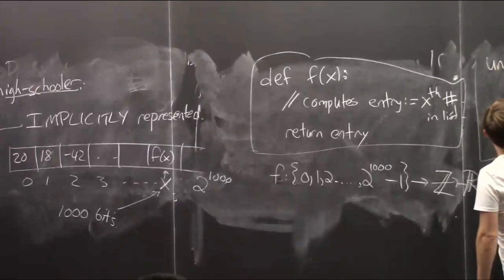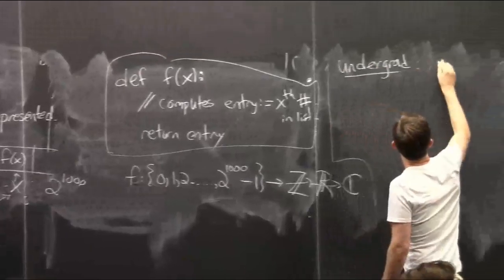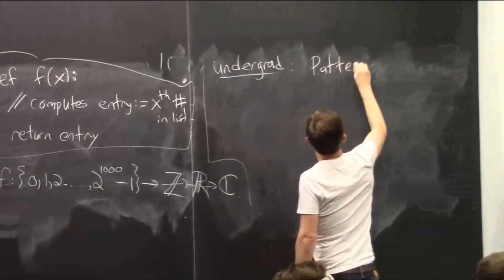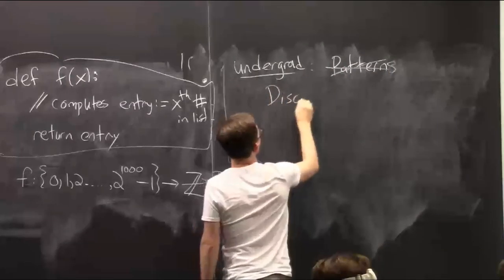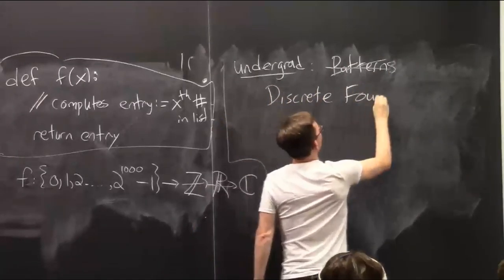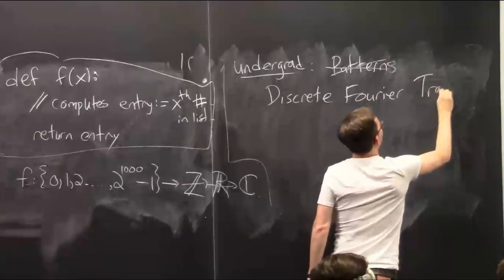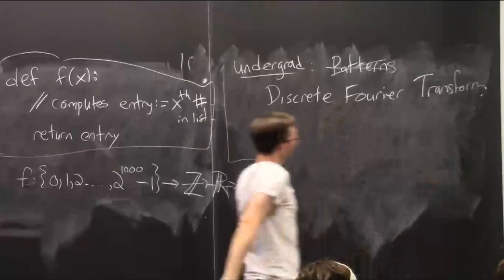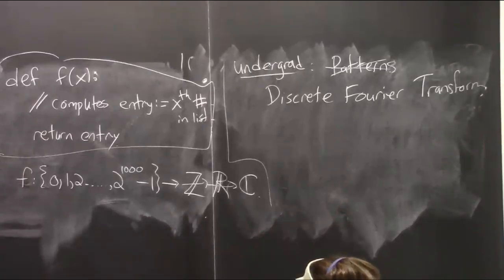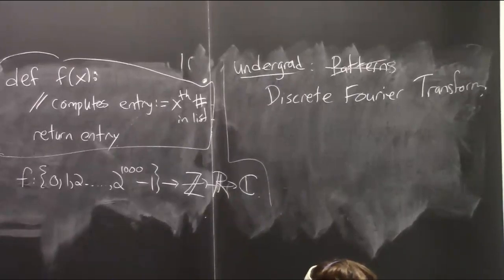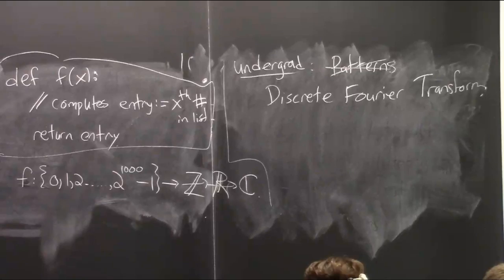The fourth level of explanation is for the undergraduate. Now we have to get serious about what we mean by 'pattern.' Basically, forget I said patterns — instead, let's talk about the discrete Fourier transform. This is where it gets serious. You've probably heard about the discrete Fourier transform a little, maybe you're an expert, maybe you only have a vague notion. Don't worry — we're going to be talking about it a lot in this course.